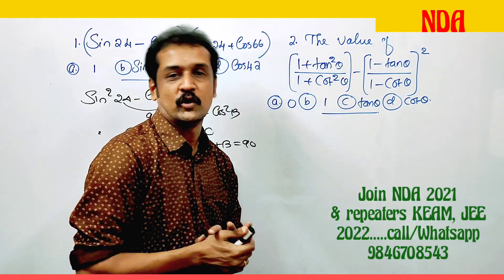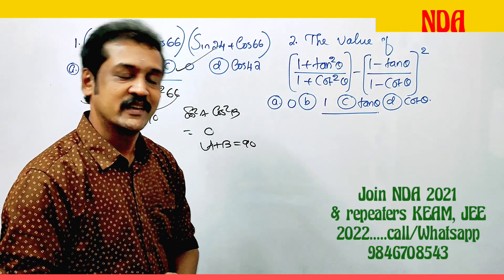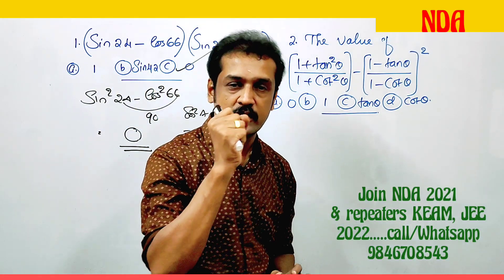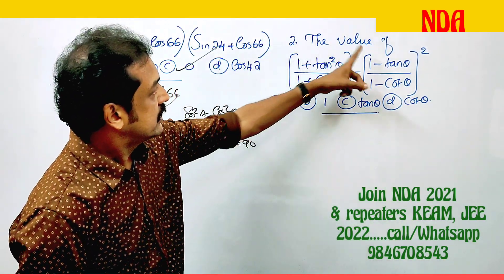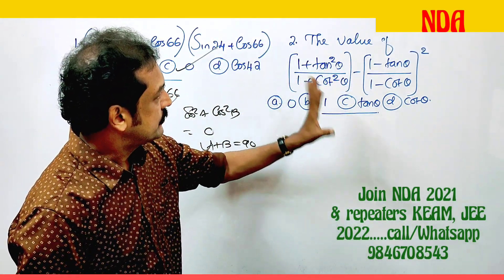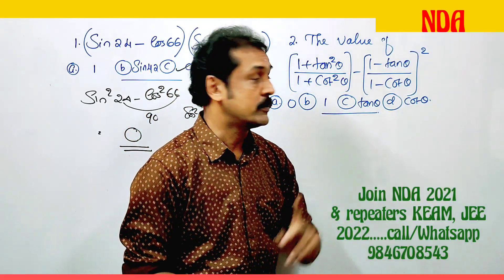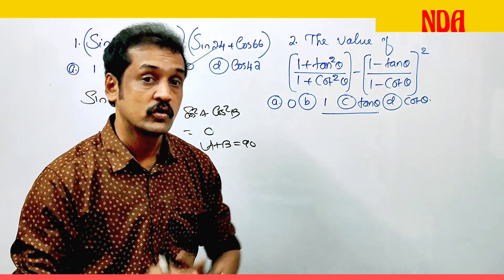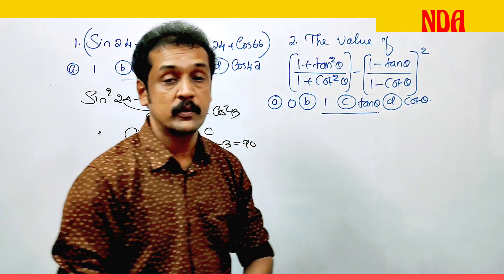Next question — trigonometry. Find the value of (1 plus tan squared theta) by (1 plus cot squared theta) minus (1 minus tan theta) by (1 minus cot theta), the whole squared. Select the correct option.